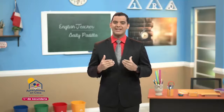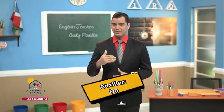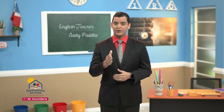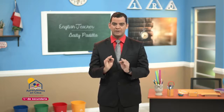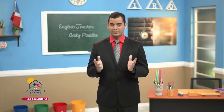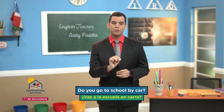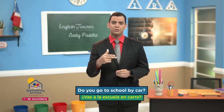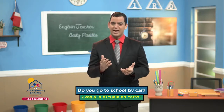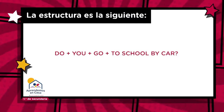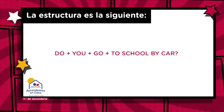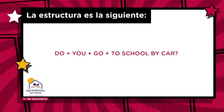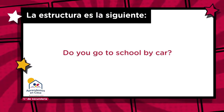Como ya sabemos, para hacer preguntas se utiliza el auxiliar DO. De la misma manera, para preguntar de forma directa — preguntas de sí o no — también se utiliza el auxiliar DO. Por ejemplo, si quieres preguntar ¿Tú vas a la escuela en carro?, la pregunta sería: Do you go to school by car? ¿Vas a la escuela en carro? Se sigue la siguiente estructura: Do — el verbo auxiliar. You — el pronombre. Go — el verbo ir en su forma base. Y el complemento, que sería el lugar y la forma de ir: school by car.